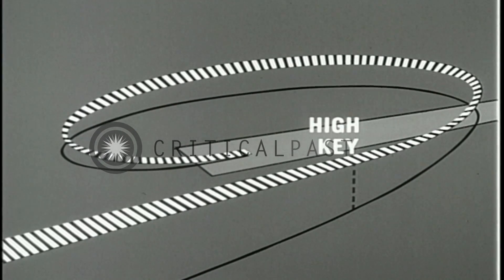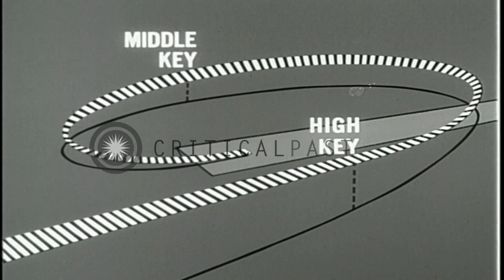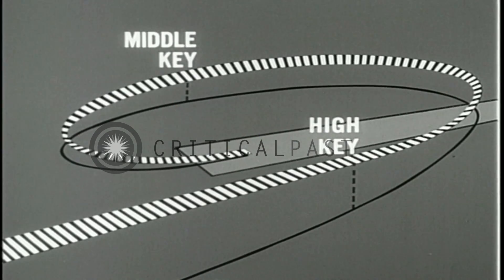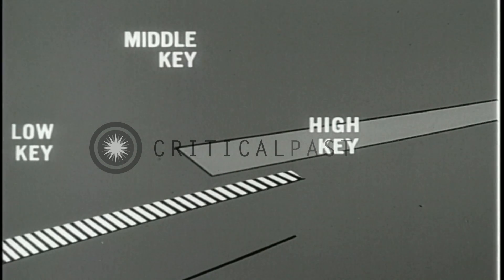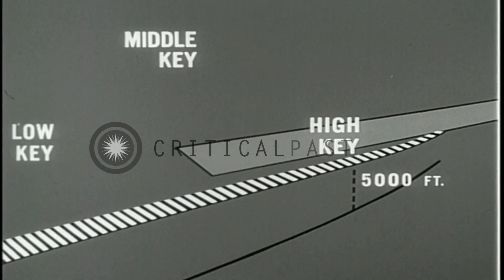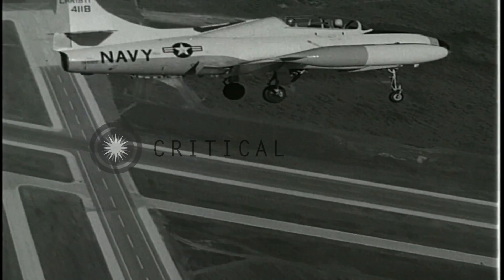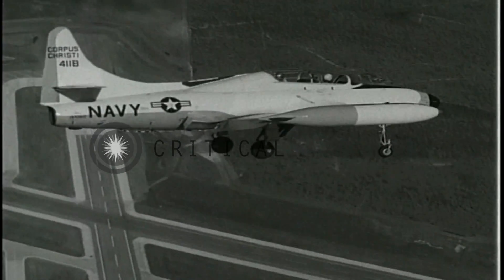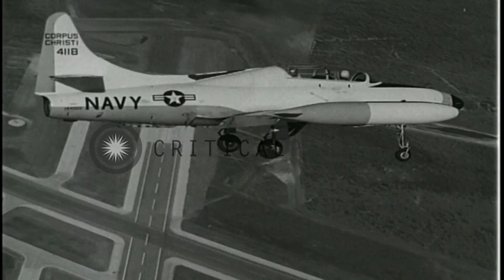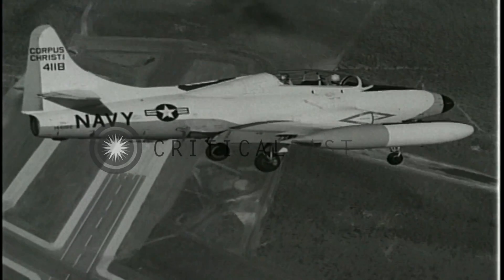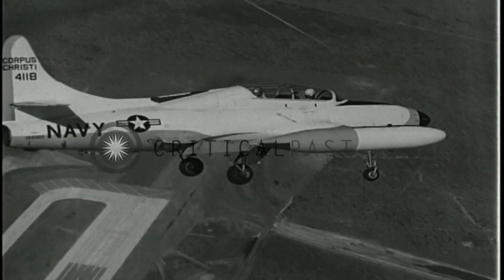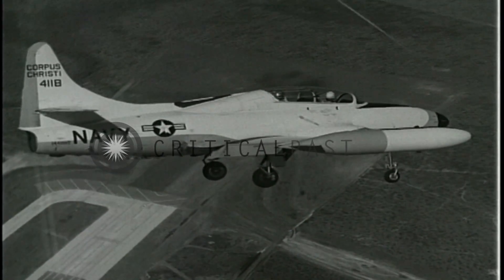The high key is above and outboard of the intended touchdown point. The middle key is about 5,000 feet abeam the touchdown point. And the low key. Adjust your glide path to reach the high key at an altitude of 5,000 feet. Lower gear and flaps. Simulated flame outs may be practiced by using speed brakes. Maintain approximately 150 knots throughout the approach, assuming a 2,000 pound fuel load.